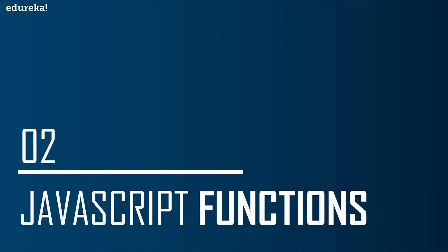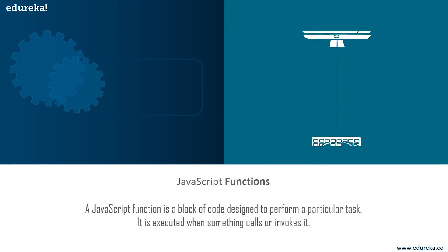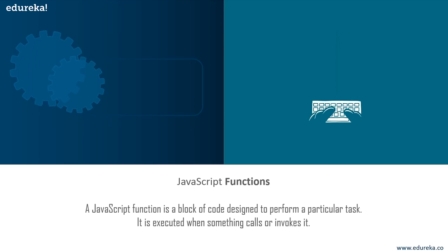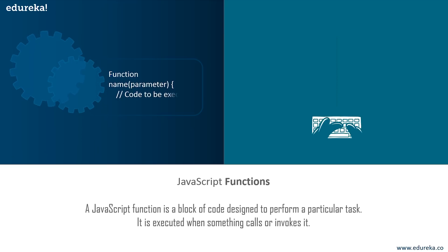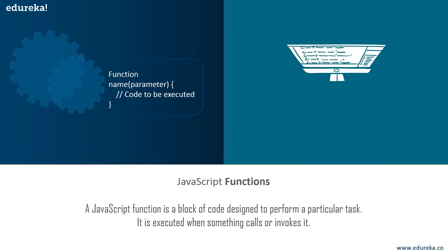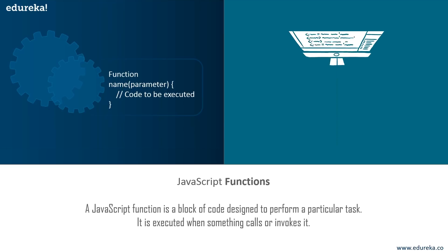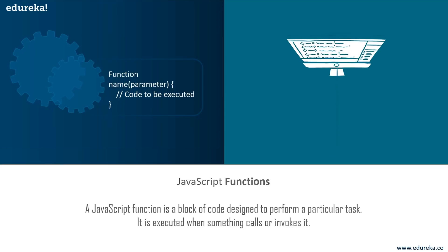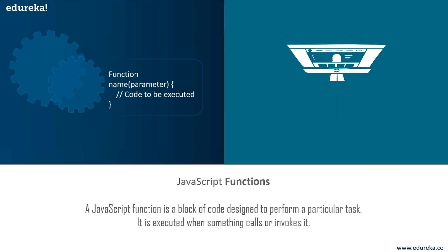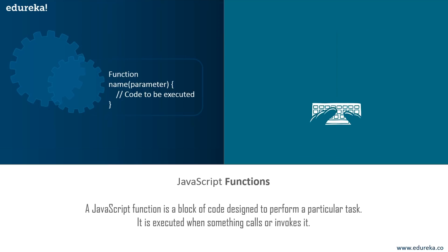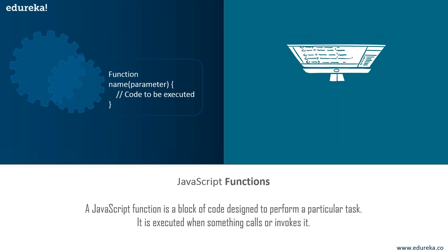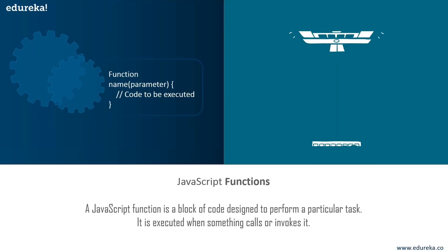Now let's move ahead and talk about JavaScript functions. The fundamental building blocks in JavaScript are known as functions. It is basically a set of statements that performs a task or calculates a value. In order to use a function, it should be defined somewhere in the scope from which you wish to call it. A function definition consists of the function keyword, followed by the name of the function, a list of parameters enclosed in parentheses and separated by commas, and the JavaScript statements enclosed in curly brackets.